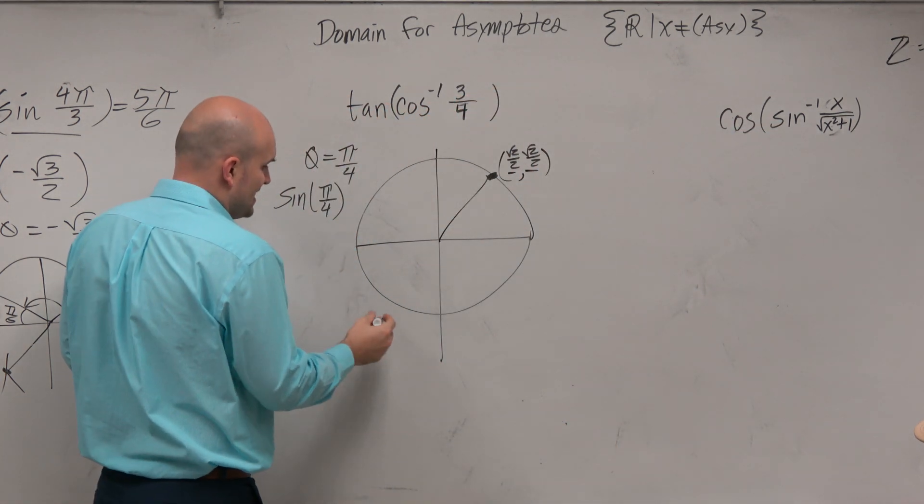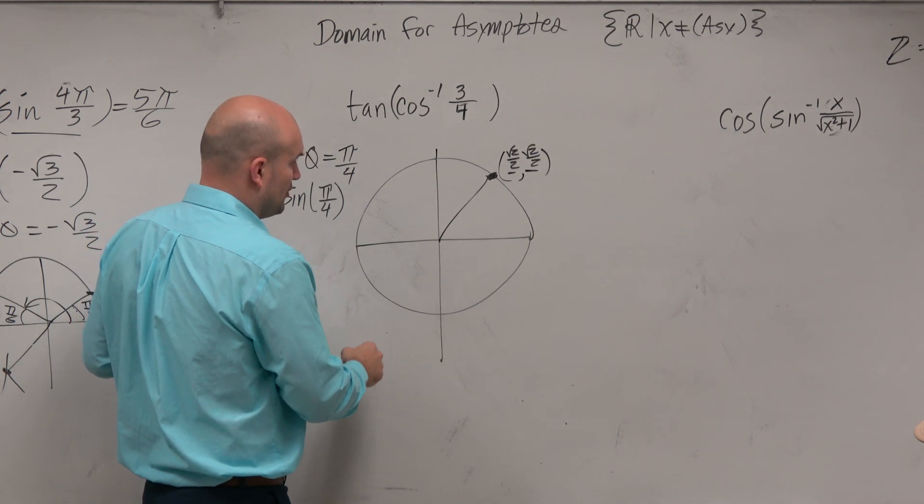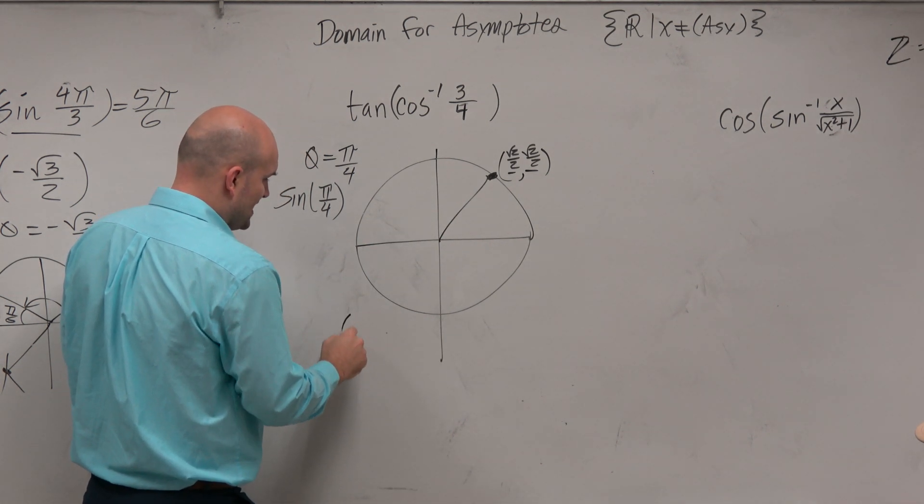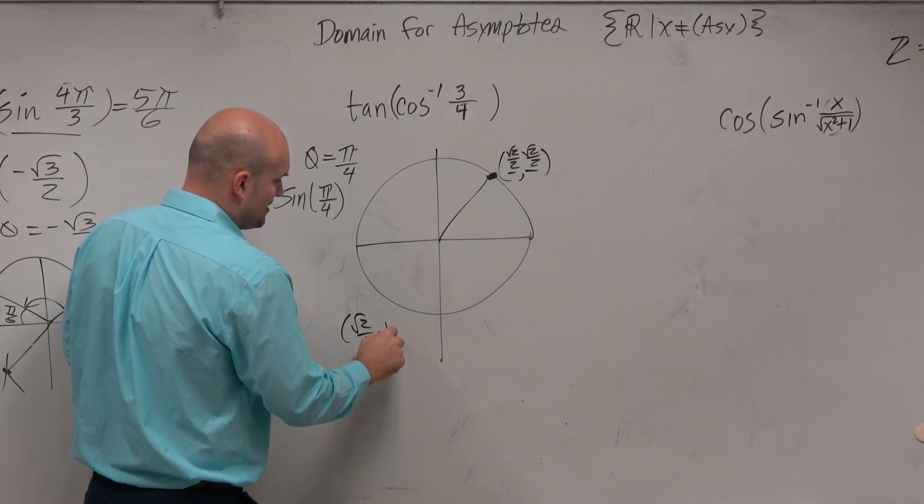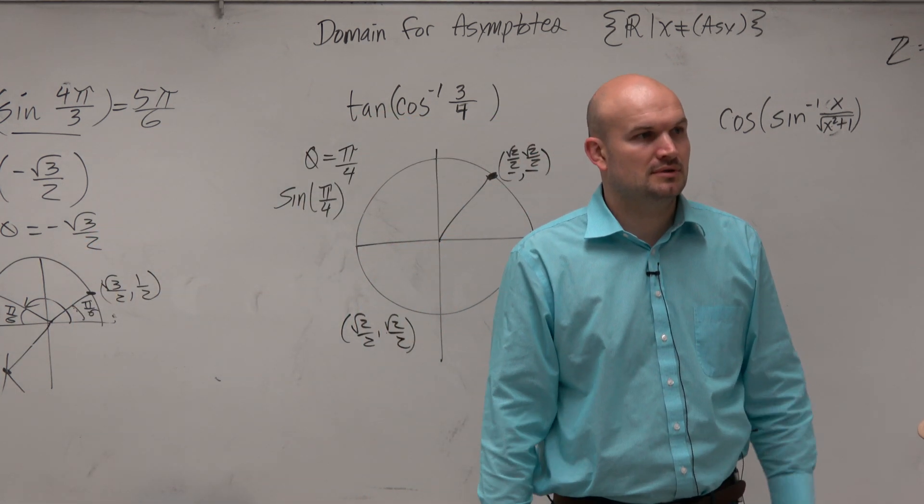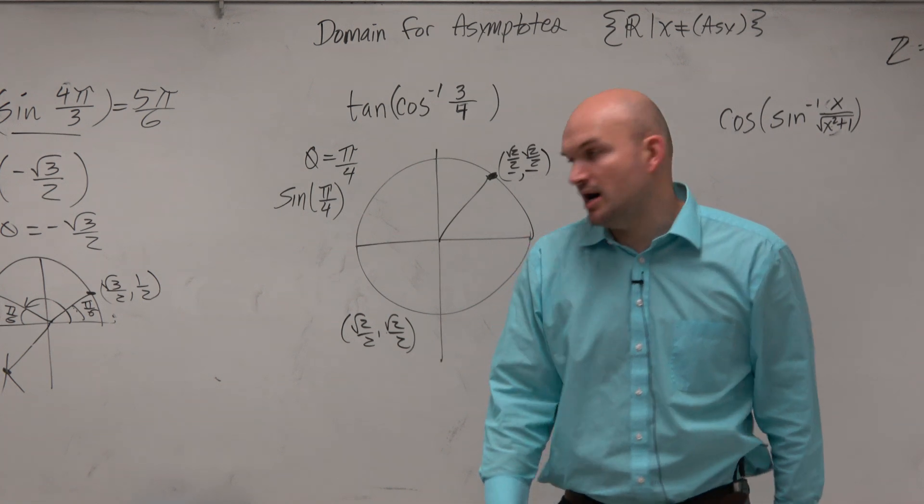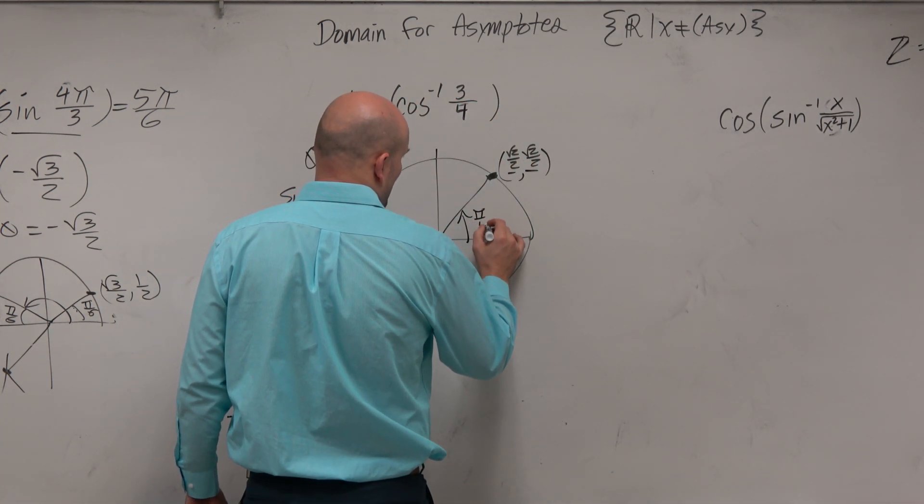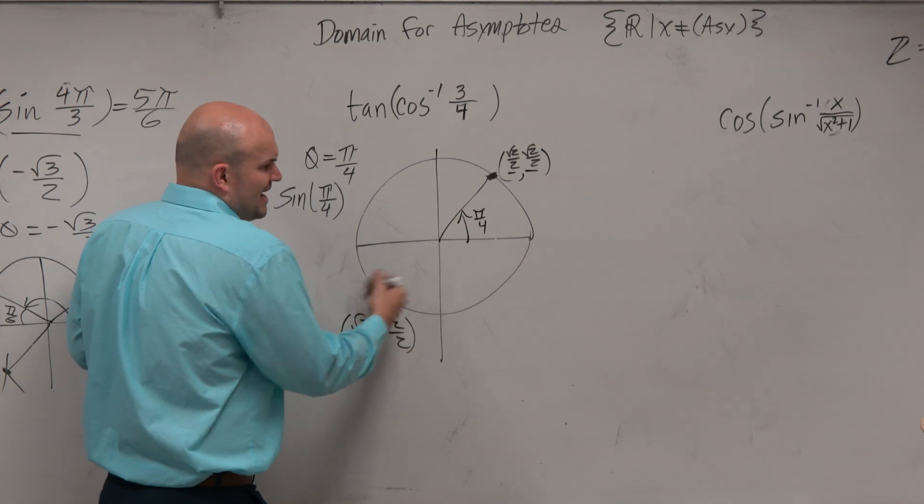The problem is, what if I said, here is a point. What if I give you a point, and I say, square root of 2 over 2 comma square root of 2 over 2. What is the angle? And then you say, well, it's 45 degrees or pi over 4. And then I say, okay, it could be that.